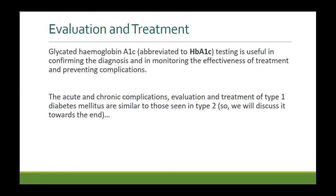Blood glucose levels can be measured directly. Another important measure is glycated or glycosylated hemoglobin — HbA1c. Glucose attaches to the globin chain of hemoglobin and remains attached for the lifespan of the red blood cell, which is 120 days. Once hemoglobin is glycosylated, it stays glycosylated and circulates for 120 days. Measuring HbA1c therefore allows you to look back in time and assess glycemic control in the patient over the last three to four months.